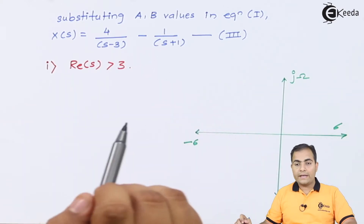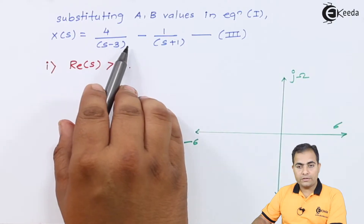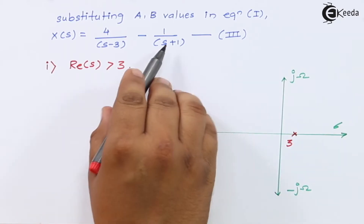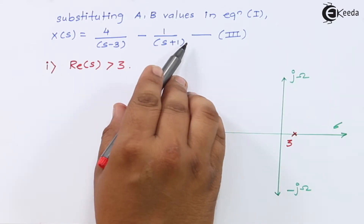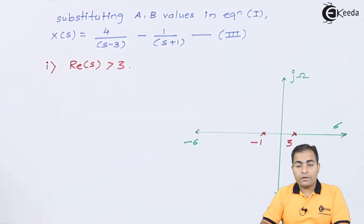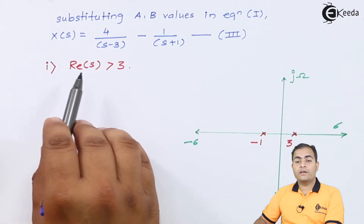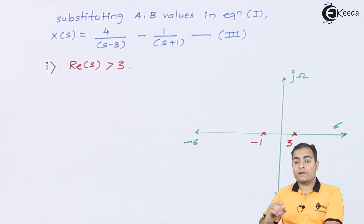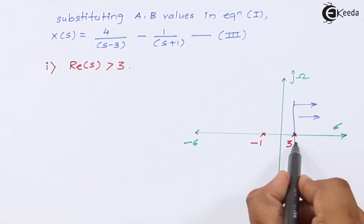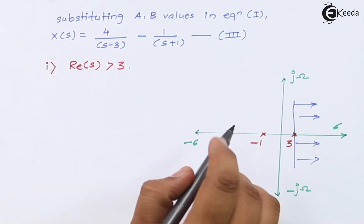Plotting the poles in the s-plane: pole at s = 3 (from s - 3 = 0) and pole at s = -1 (from s + 1 = 0). The rightmost pole is s = 3, so for ROC 1 the ROC exists to the right of s = 3. We now apply the inverse Laplace transform to Equation 3 under this right-handed sided ROC.